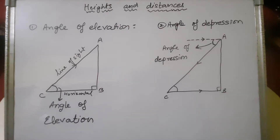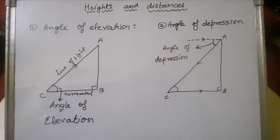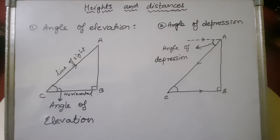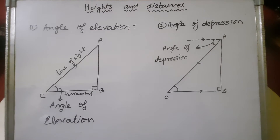Children, today we are going to start the next topic in trigonometry: heights and distances. First we will discuss a few important things. Horizontal means parallel to the surface and vertical means perpendicular to the surface.